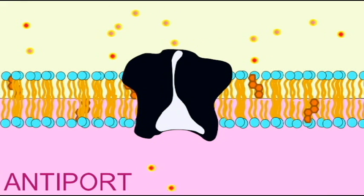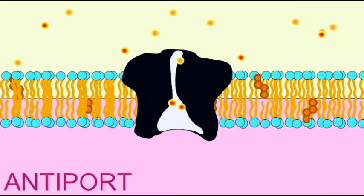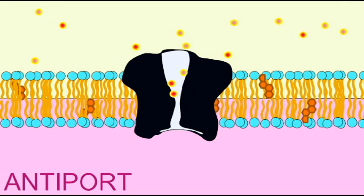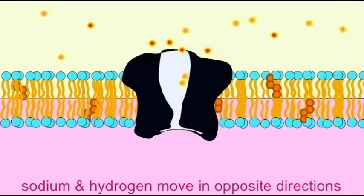This type of transport is known as antiport because the sodium and the hydrogen ions are moving in opposite directions. While sodium is entering the cell, the hydrogen ions are being pumped from the cell.